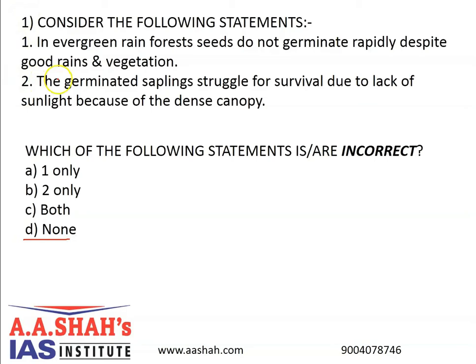None of the above statements are incorrect, which means 1 and 2 both are correct. Seeds don't germinate quickly in evergreen rainforest in spite of good rains and vegetation as the surface soil is heavily leached, with nutrients washed away by running water. Here poor soil is the limiting factor. A lot of factors determine the survival of an organism; one single factor can limit the range of an organism — this single factor is called a limiting factor. Likewise, germinated saplings may not survive due to lack of light because of the dense canopy.